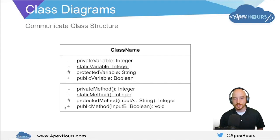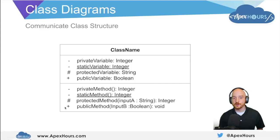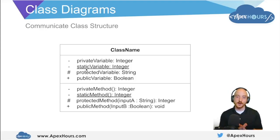We have private, protected, and public methods. And another thing we'll use when talking about class diagrams is that an underline means a variable or method is marked as static.